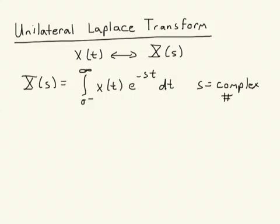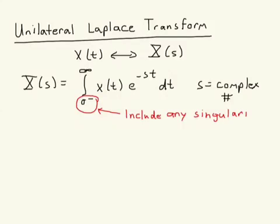A couple of things to note. First, we are integrating from 0-minus to infinity. The fact that we're integrating from 0-minus means that we include any singularities at t equals 0. By singularities, we might mean, say, a delta function, delta of t. So we make sure that is included in this integration.